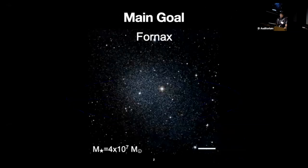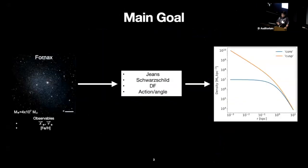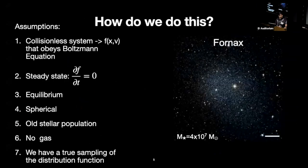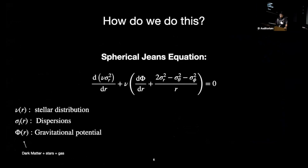This is what a typical dwarf galaxy looks like. What I concern myself with is taking observables like the position, velocities, and metallicities of stars in these systems and doing dynamical mass modeling in order to say something about the amount and distribution of dark matter in these systems. The way I go about doing this is by making a lot of assumptions. With spherical Jeans modeling, I make several assumptions, but if they're all true, I can write down this simple one-dimensional equation, which relates my observables — the spatial and velocity distribution of the stars — to the underlying gravitational potential.